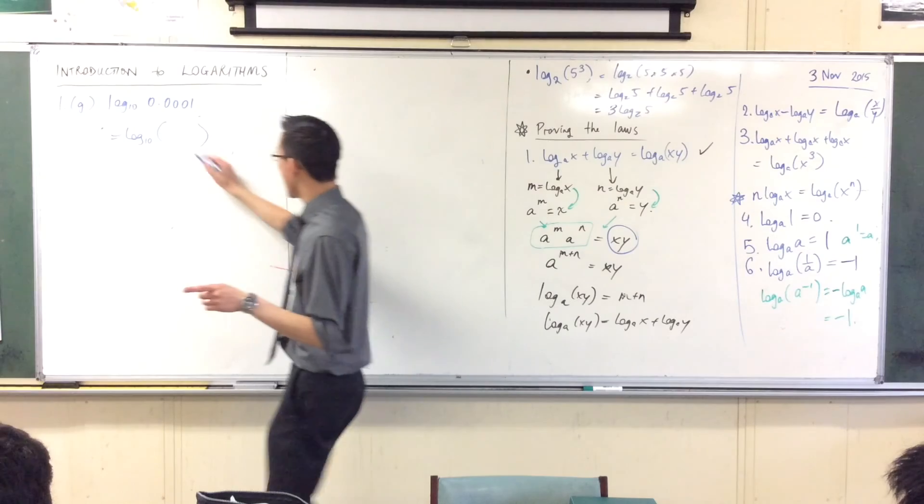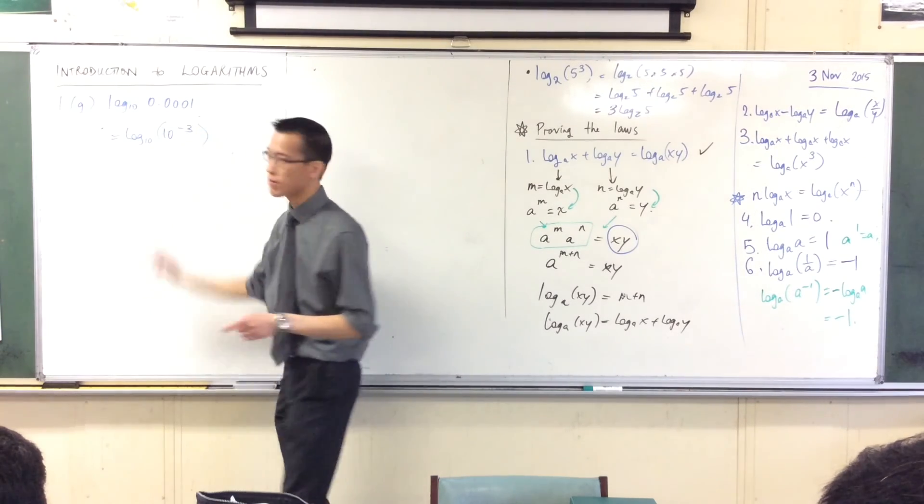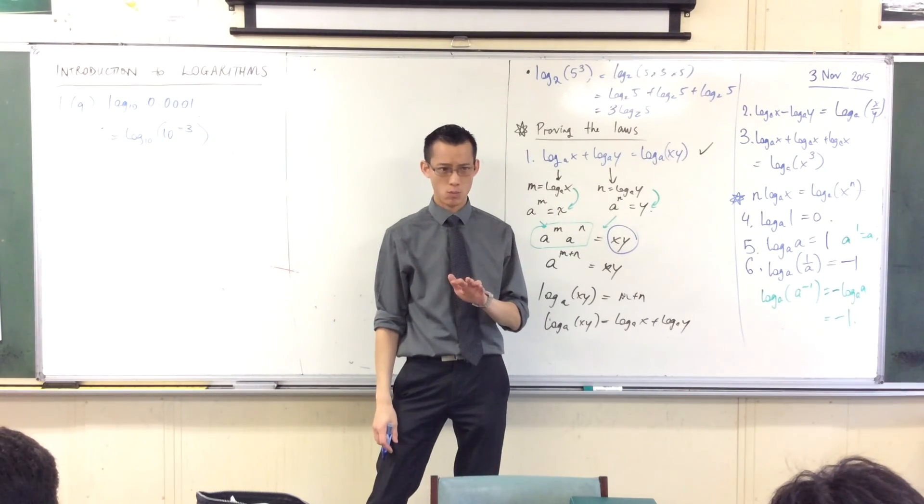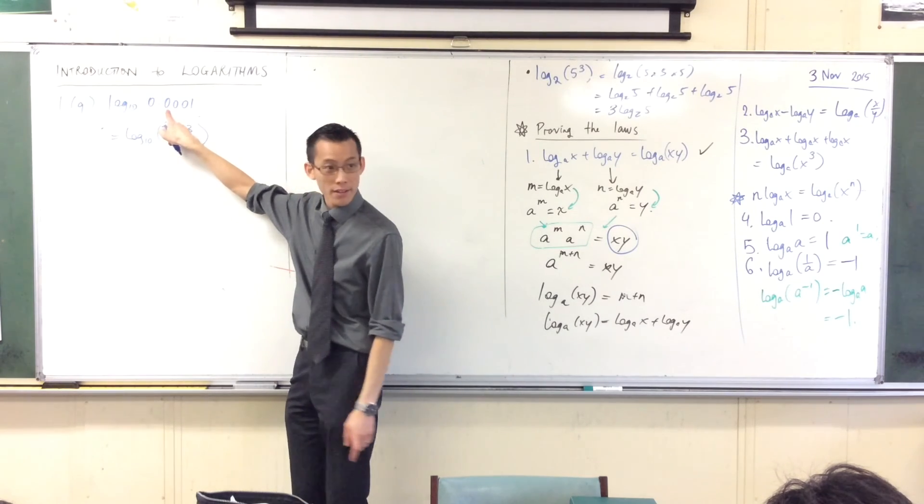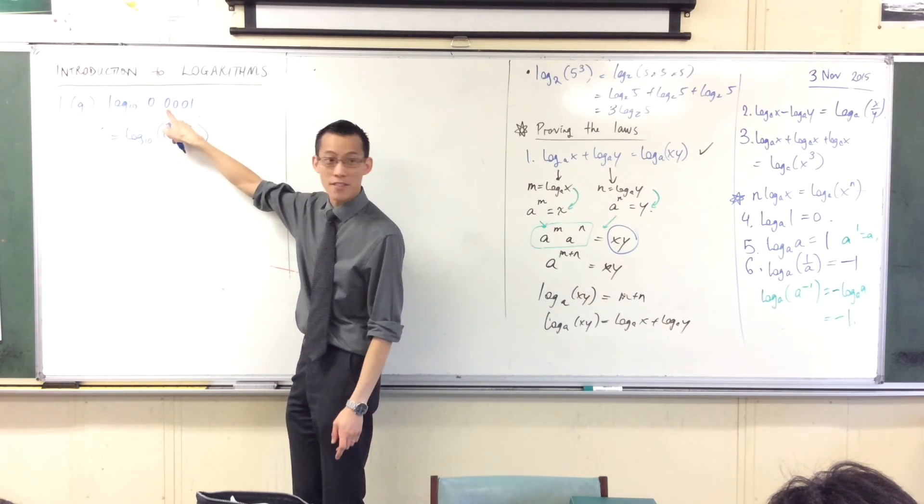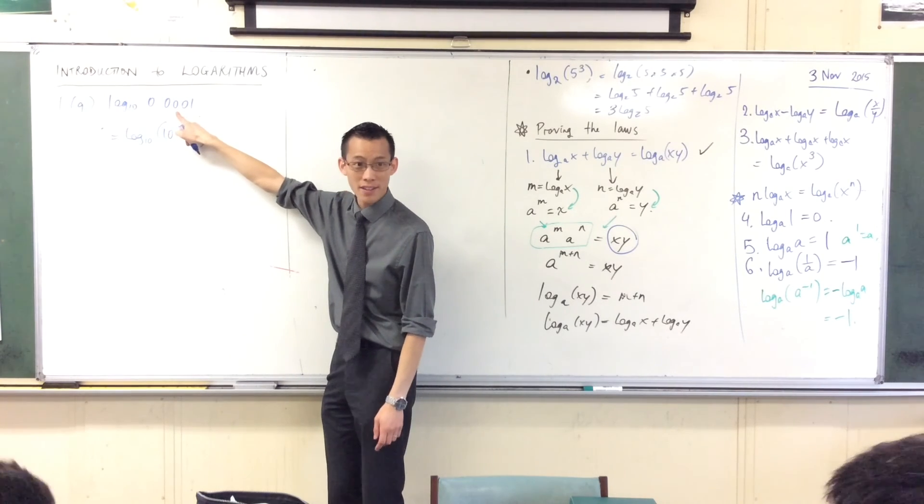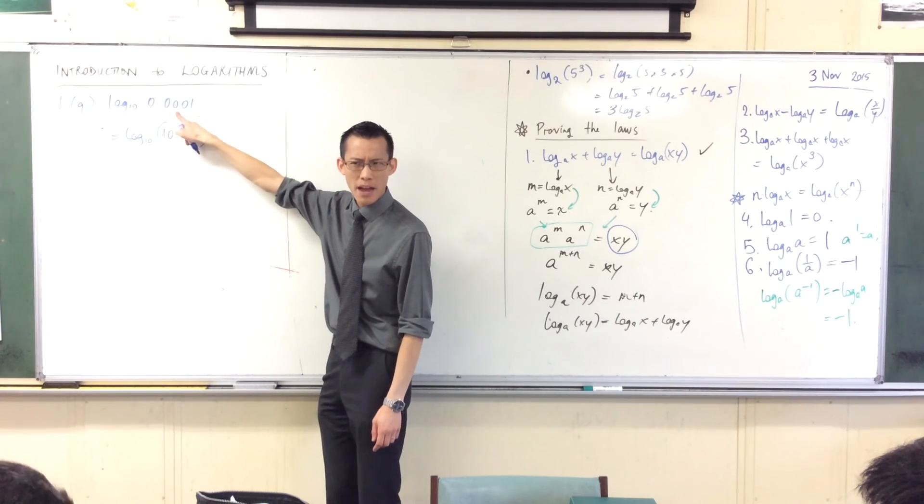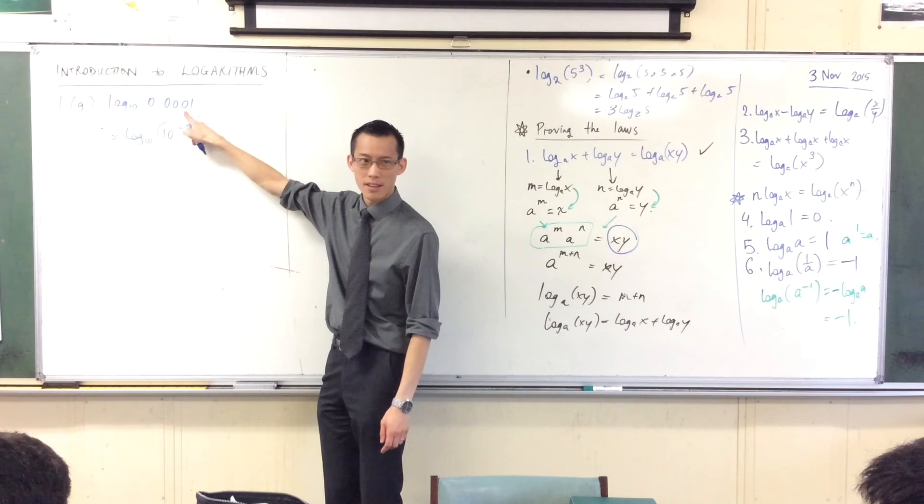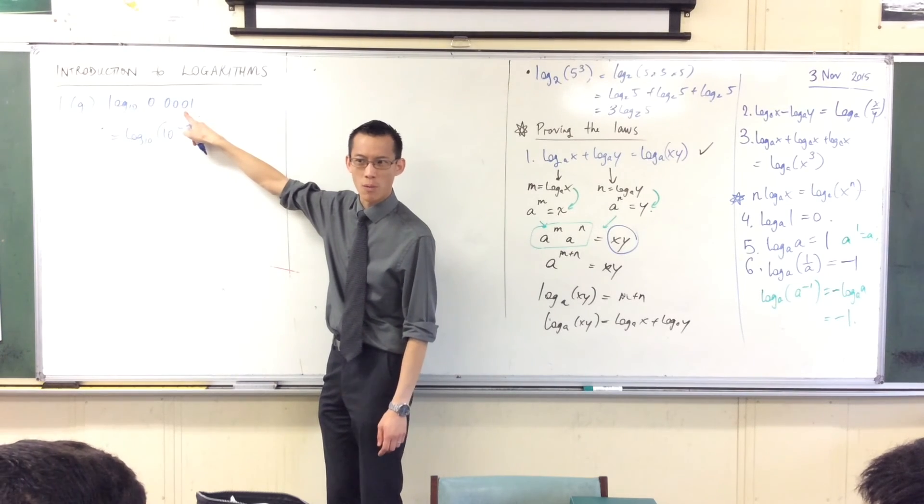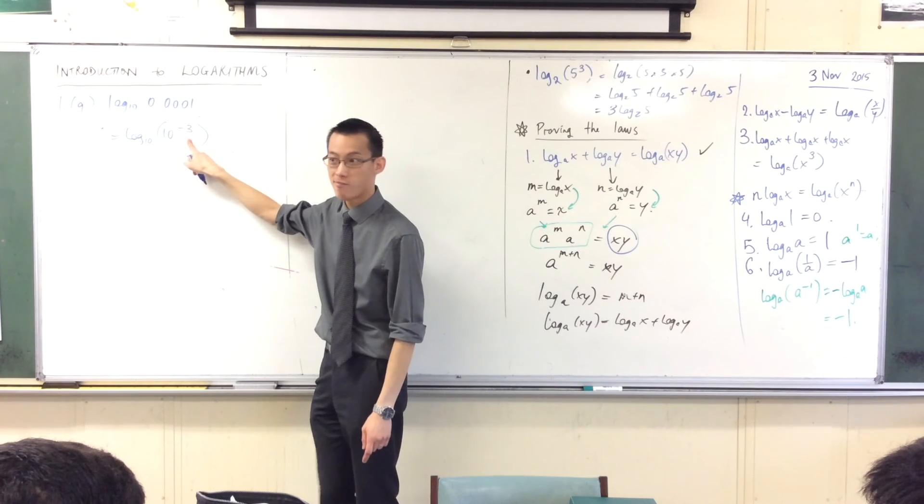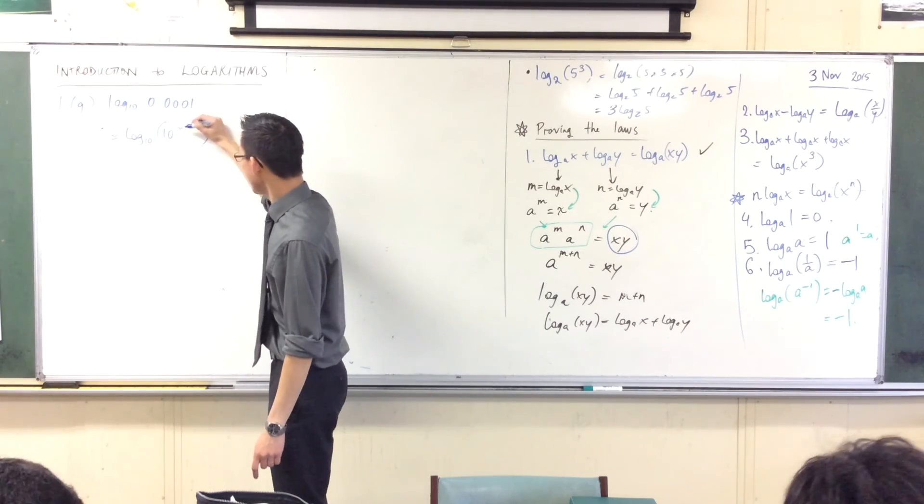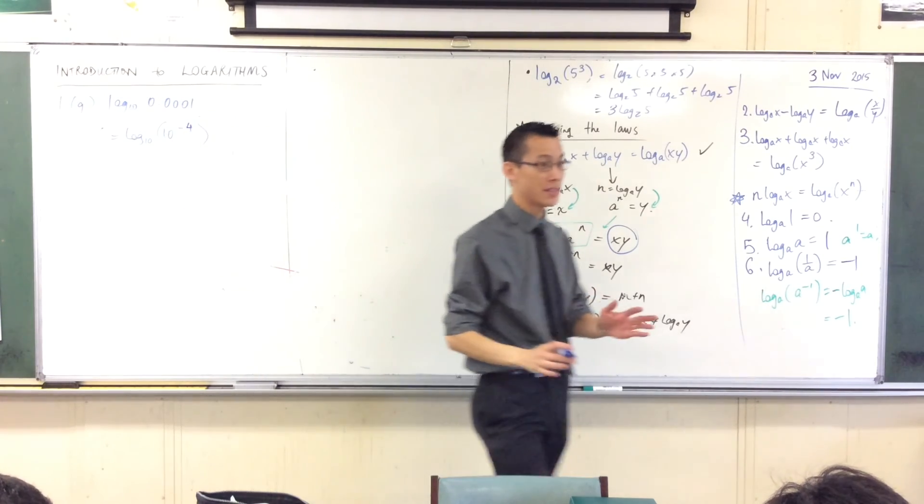10 to the power of minus 4. Does it check out? Does it work? 10 to the power of negative 1 is just 0.1. Then 10 to the power of negative 2 is 0.01. 10 to the power of negative 3 is only 0.001. I need one more 0. So therefore, what's it going to be? Minus 4. Your calculator can check this for you. This is why we're doing this.